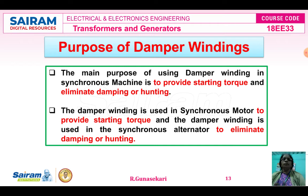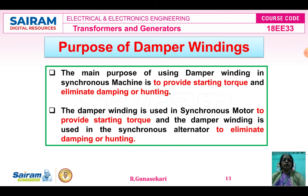Why do we use the damper winding? The main purpose of damper winding in the synchronous generator is to provide starting torque and to eliminate damping or hunting. For these two purposes we use the damper winding in the synchronous machine, whether it is a synchronous motor or synchronous generator. The damper winding is used in the synchronous motor to provide starting torque, and in the synchronous generator to eliminate damping or hunting.